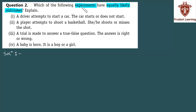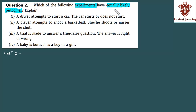जब भी किसी experiment के सारे outcomes की probability equal होगी, तब हम उस experiment के outcomes को equally likely outcome बोलेंगे.